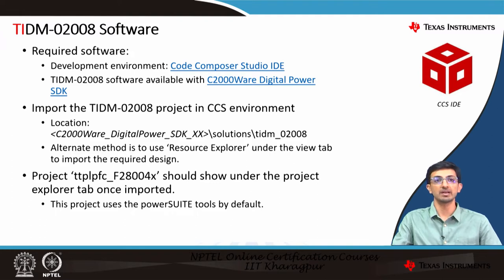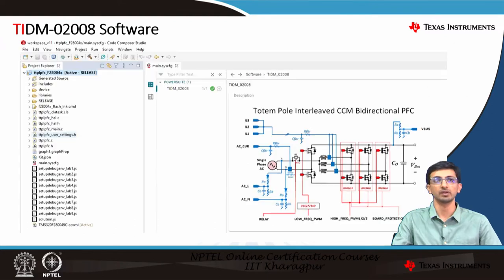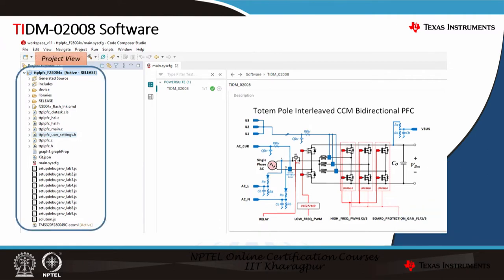Once you have imported the design, the project TTPL — basically the Totem Pole PFC — underscore the device part number F28004X should show under the project explorer tab. This project by default uses the power suite tools. Once imported in CCS, on the left-hand side you can see the project view.